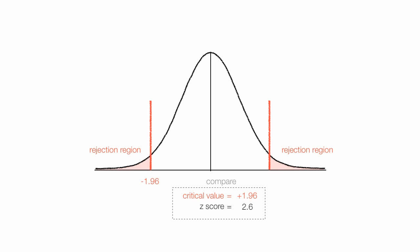So we take the critical value, and we compare that to some type of test result. In this case, the test was a z-score, the result was a z-score.